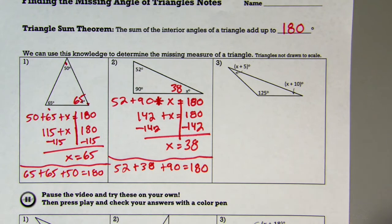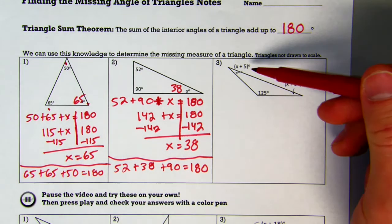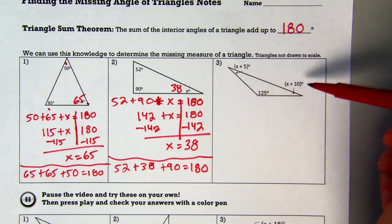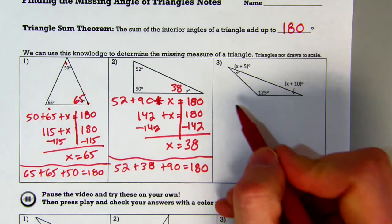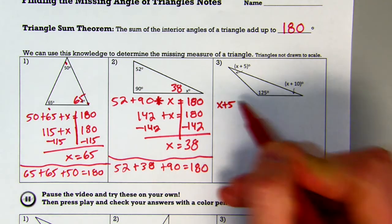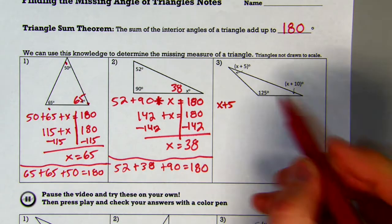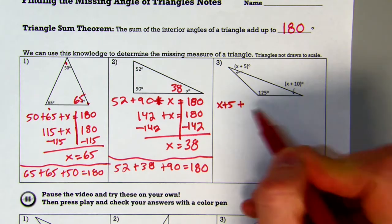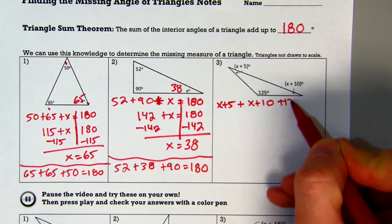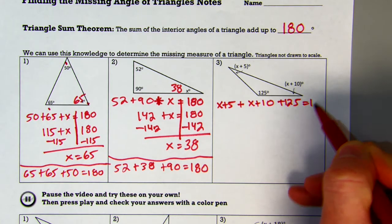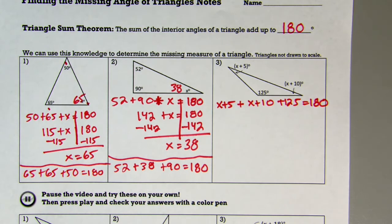Now for my third example. Instead of just having x, I actually have some variables in there, a little more complex, but it's the same method. I'm going to take my first angle, x plus 5, add it to x plus 10, and add it to 125. Together they're all going to equal 180.